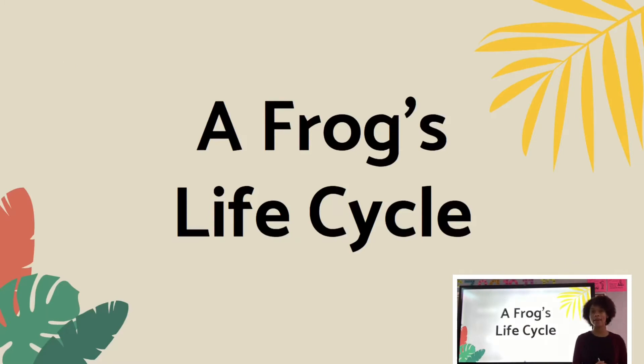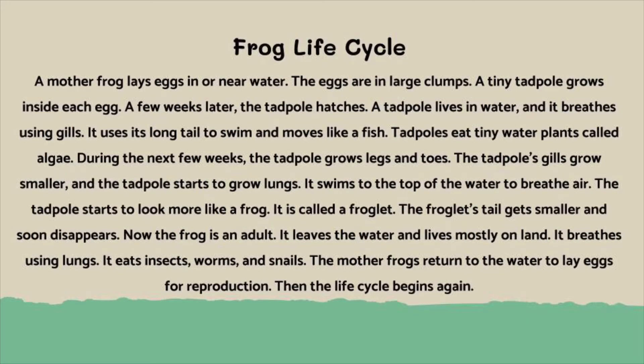Now that we have covered a few vocabulary words, let's go ahead and look at a frog's life cycle. A mother frog lays eggs in or near water. The eggs are in large clumps. A tiny tadpole grows inside each egg. A few weeks later, the tadpole hatches. A tadpole lives in water and it breathes using gills. It uses its long tail to swim and move like a fish. Tadpoles eat tiny water plants called algae.